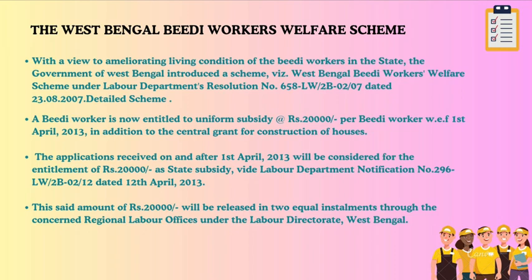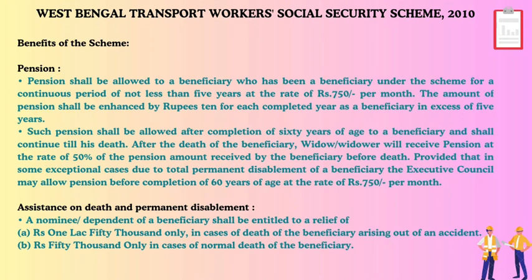West Bengal Transport Workers Social Security Scheme 2010 — Pension: a beneficiary who has been enrolled for a continuous period of not less than five years shall receive a pension of 750 rupees per month. The pension amount is enhanced by 10 rupees for each completed year as a beneficiary in excess of five years, and is allowed after completion of 60 years of age, continuing till death. After the death of the beneficiary, the widow/widower will receive pension at 50% of the amount received by the beneficiary before death. In exceptional cases of total permanent disablement, the executive council may allow pension before 60 years at 750 rupees per month. Assistance on death: a nominee/dependent is entitled to 1,50,000 rupees in cases of accidental death and 50,000 rupees in cases of normal death.